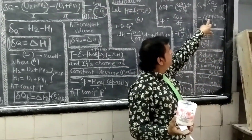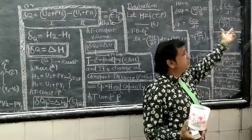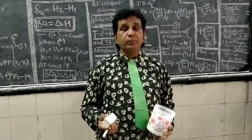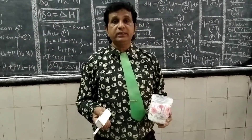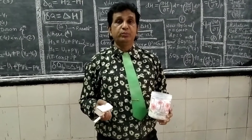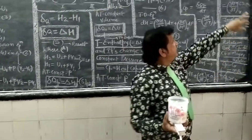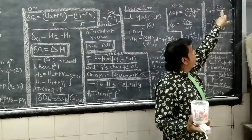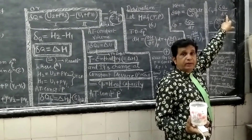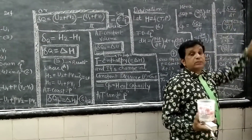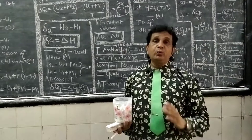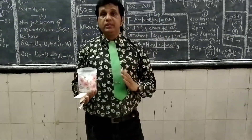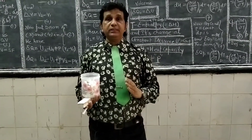The heat capacity at constant volume is defined as the ratio of ΔU to the change in temperature dT. Its dimensions can be expressed as calories per temperature, and units as calorie mol⁻¹ degree⁻¹ for one mole.